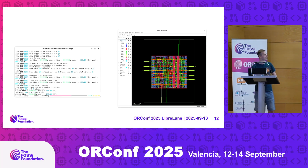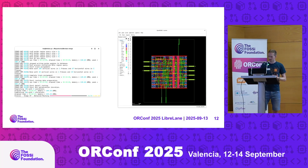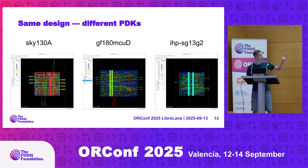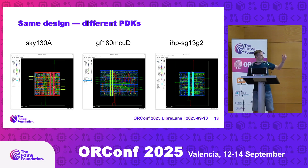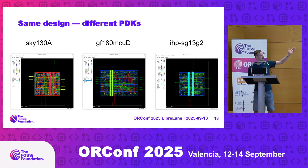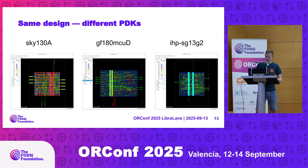And that's what we get here. The cool thing is you can do this with different PDKs — using the same design and same configuration file, you can implement this 8-bit counter for different PDKs. Here we have it for Sky130, GF180MCU, and also IHP SG13G2. Same design, different PDKs.